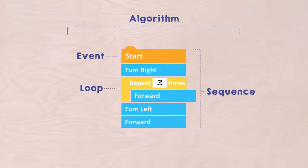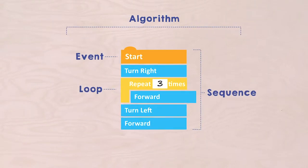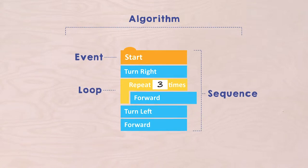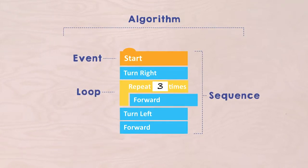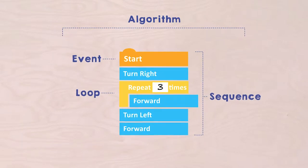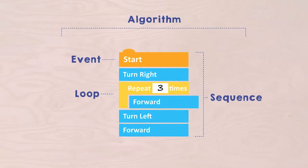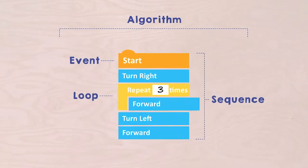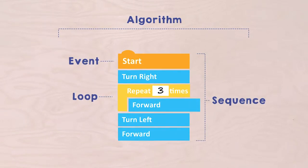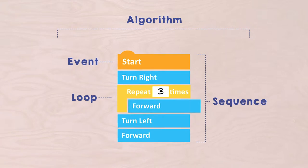Hey there. In the previous mission you have discovered that an algorithm is a step-by-step plan to solve a problem, that such an algorithm starts with an event, that a series of steps within such an algorithm is called a sequence, and that a sequence can contain loops, pieces that are repeated a number of times.